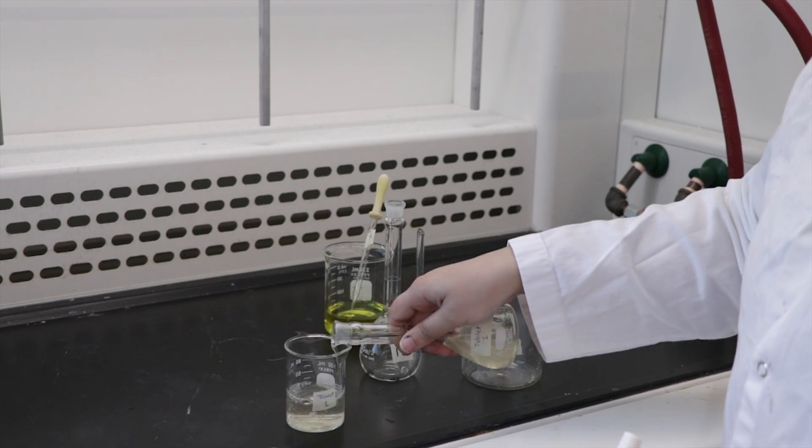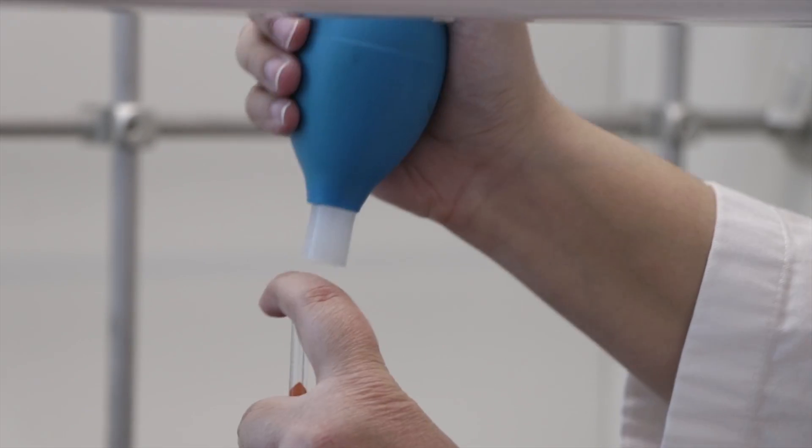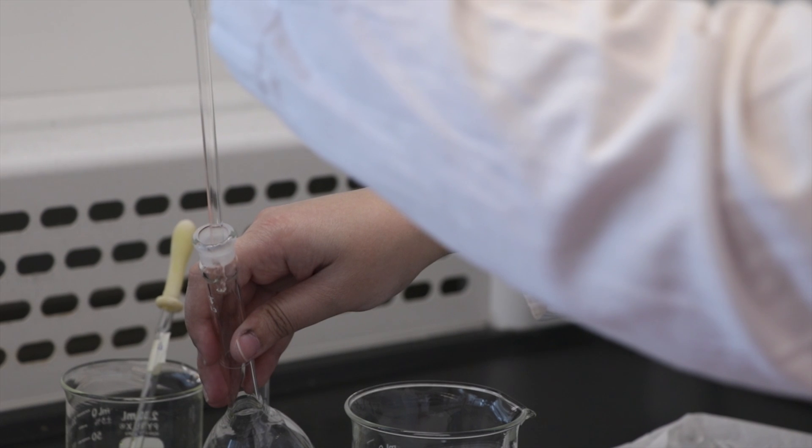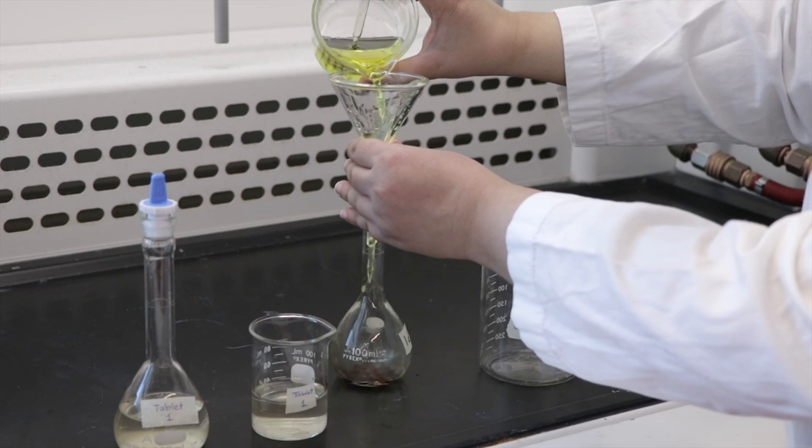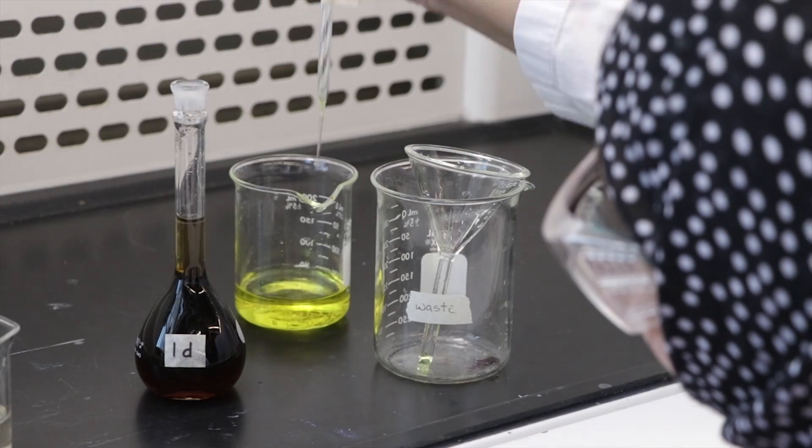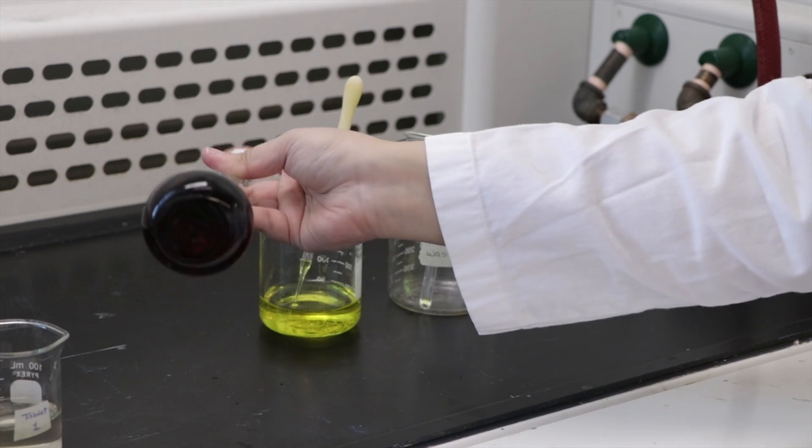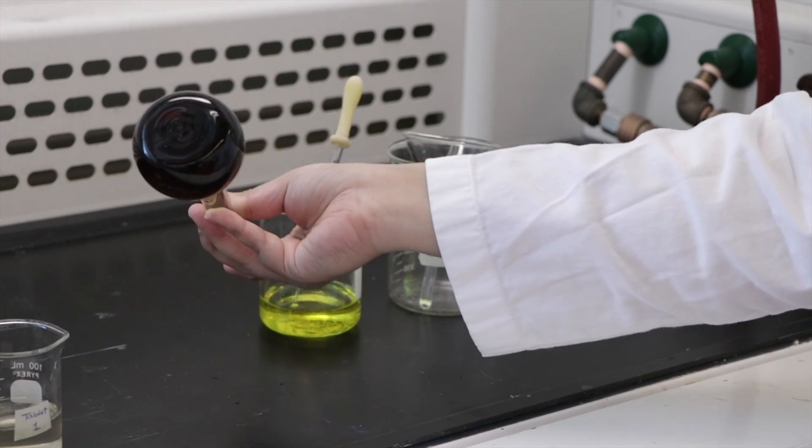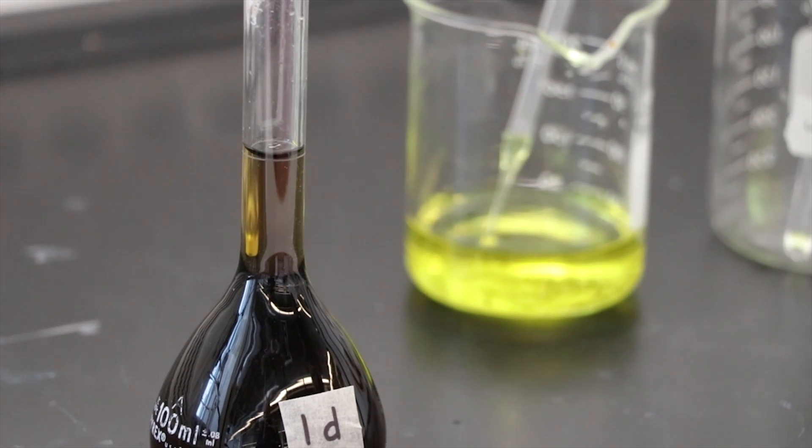Next, pour the tablet sample into a beaker. Using a 2 ml transfer pipette, pipette 2 ml of the sample into another 100 ml volumetric flask and fill to the mark with the FeCl3 solution. After inverting the solution, measure the percent transmittance of the diluted tablet sample immediately. Repeat these steps for the remaining two samples.